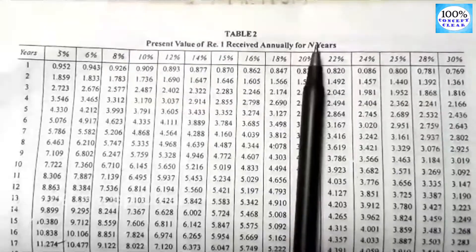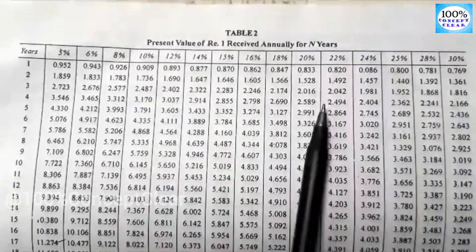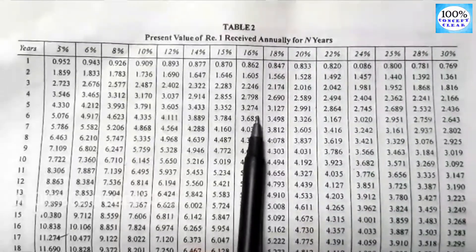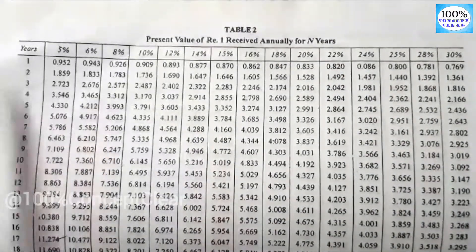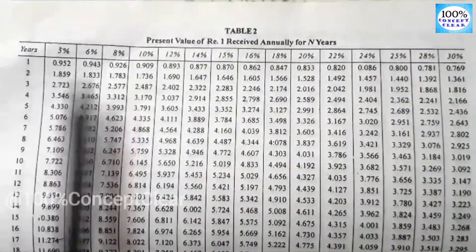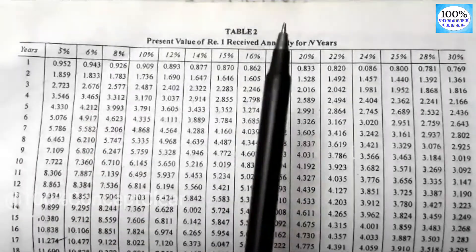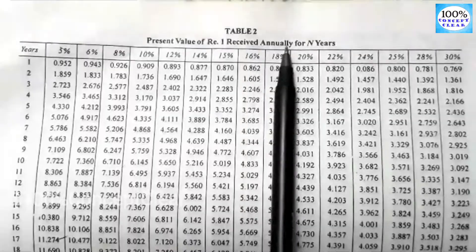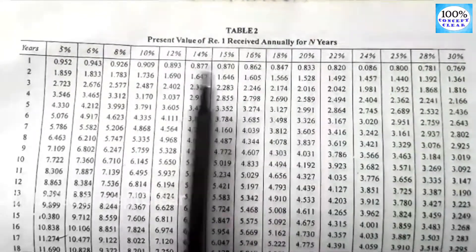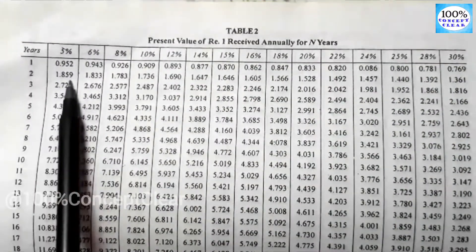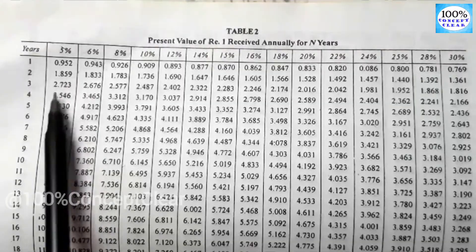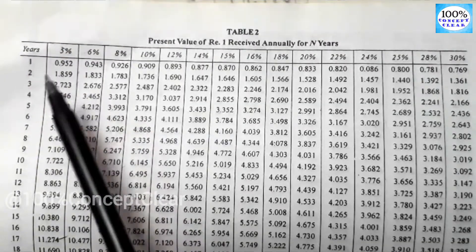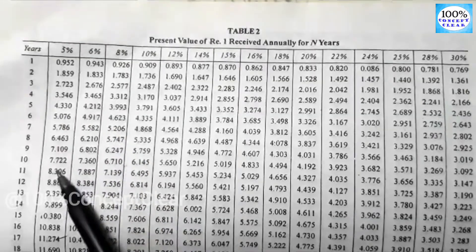Let's look at the difference between Table 1 and Table 2. In Table 2, we have the present value of Rupee 1 received annually for N years. As the years increase, we add the cumulative value. So we add the value year by year in Table 2.